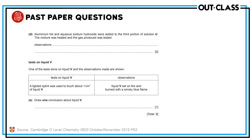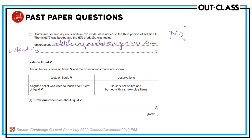Aluminium foil and sodium hydroxide were added to the third portion of solution U; the mixture was heated and the gas produced was tested. Aluminium foil and sodium hydroxide are the test for nitrate ions. Since it was chromium(III) nitrate, nitrate ions are present, so bubbles of a colorless gas are seen which turns damp red litmus blue. It is ammonia gas — nitrate ions produce ammonia gas with aluminium powder and sodium hydroxide.